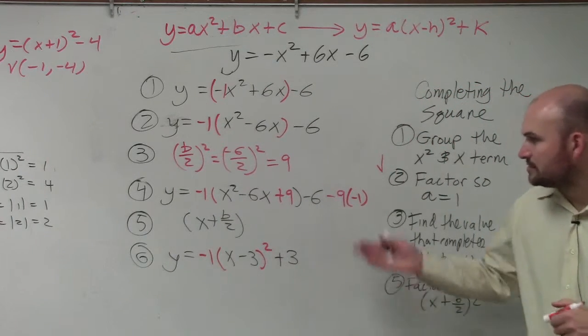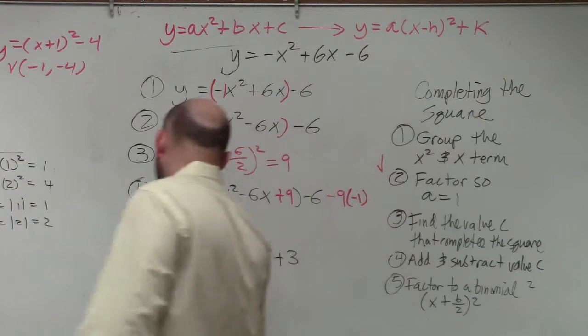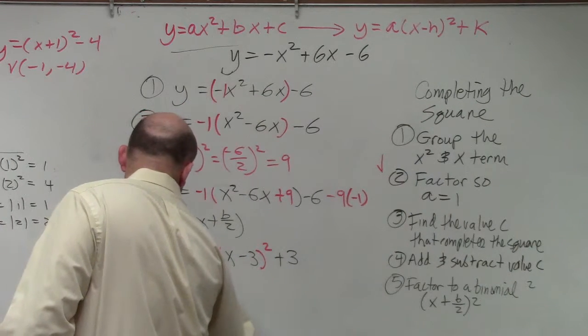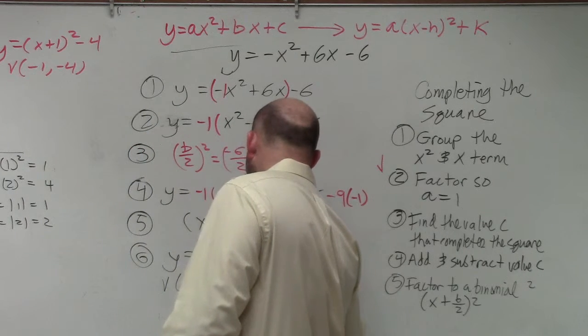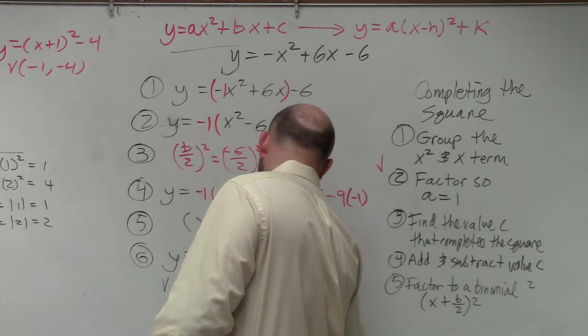So now we can identify the vertex, which is 3 comma 3. The axis of symmetry is x equals 3.